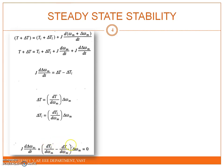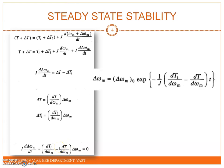Using the operator D equal to d by dt, the equation becomes D plus (1/J) times the bracket term equal to 0. The solution is: delta omega_M equal to the initial value times e raised to minus (1/J) times (dT_L by d-omega minus dT by d-omega_M) times t. An operating point will be stable if delta omega_M approaches 0 as t approaches infinity.